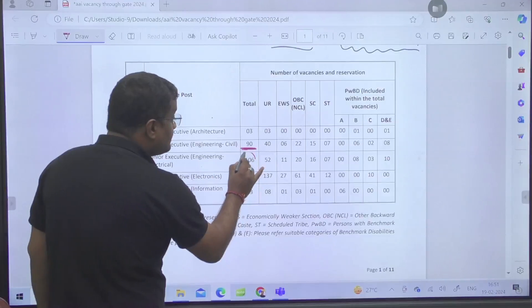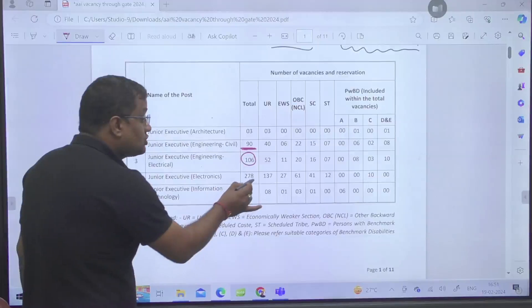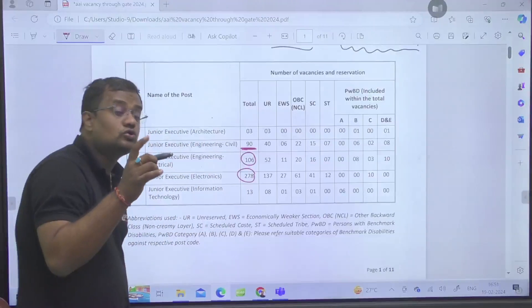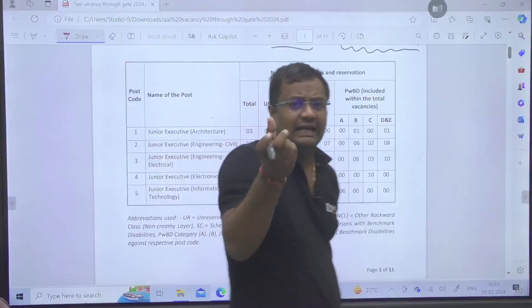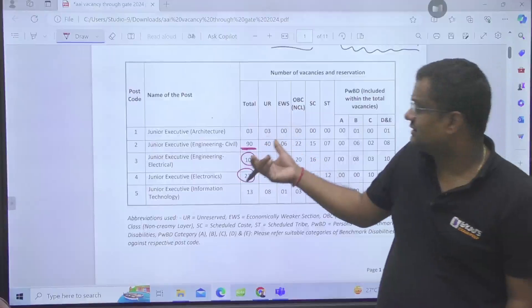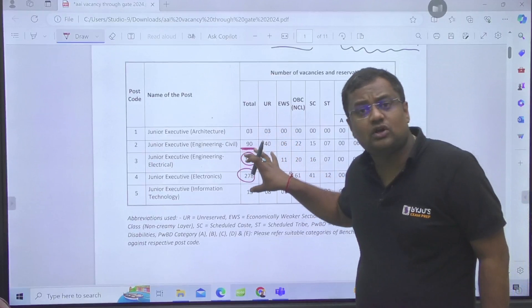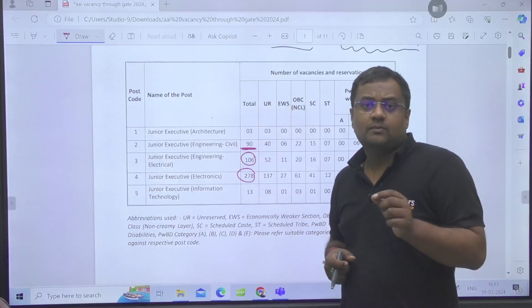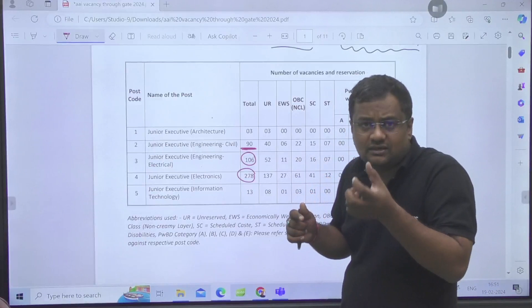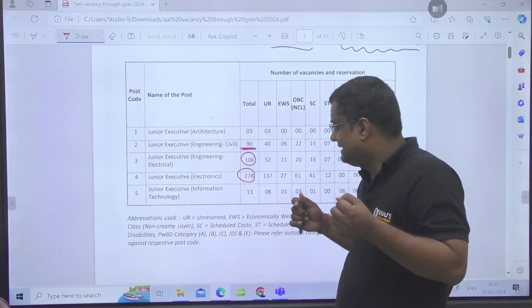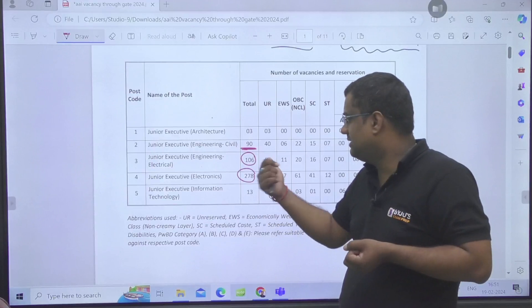In electrical there are 106 vacancies, in electronics 278 vacancies. Now all those students whose rank is 1500, 1800, or 2500 are thinking that they will not be eligible here, but let me tell you these are huge numbers of vacancies.